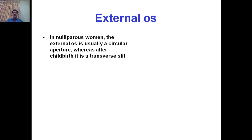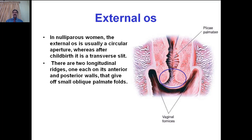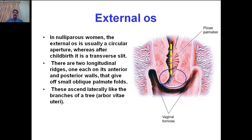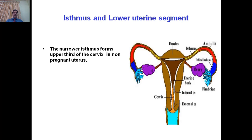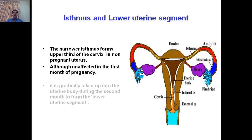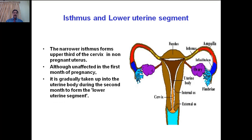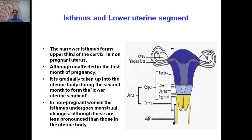In non-pregnant women, the external os is usually a circular aperture, whereas after childbirth it is in the form of a transverse slit. There are two longitudinal ridges, one each on its anterior and posterior walls that give off small oblique folds ascending laterally like the branches of a tree — this arrangement is called the arbor vitae uterinae. The narrow isthmus forms the upper third of the cervix in the non-pregnant uterus. Although unaffected in the first month of pregnancy, it is gradually taken up into the uterine body during the second month to form the lower uterine segment. In non-pregnant women, the isthmus undergoes menstrual changes, although these are less marked than those in the body of the uterus.